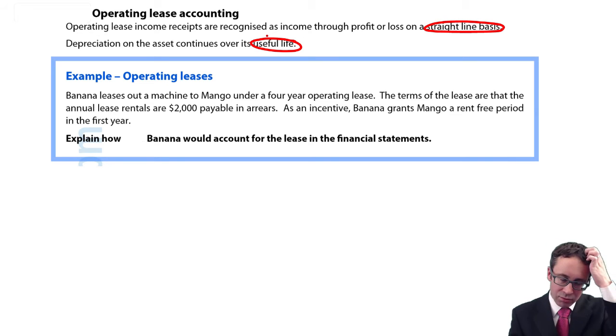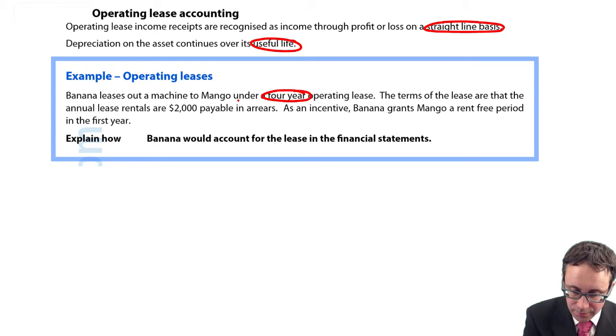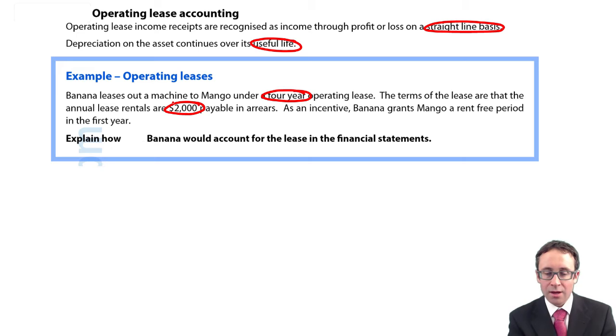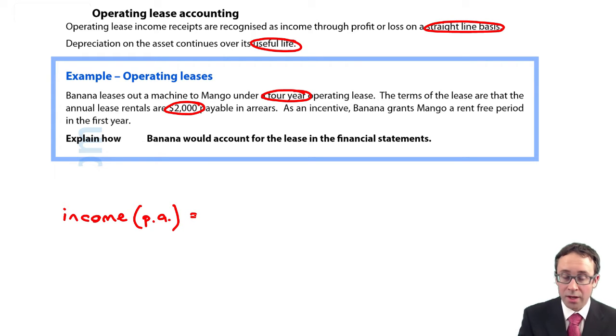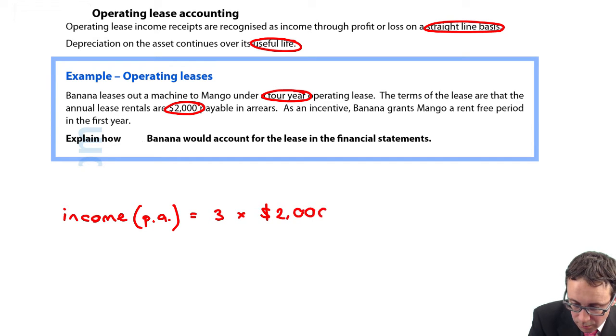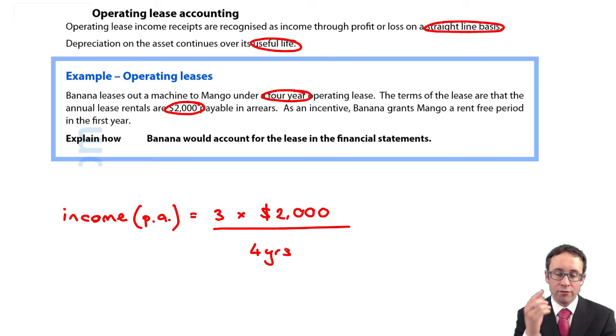The terms of the lease are that annual lease rentals are $2,000 payable in arrears. So we have four years, $2,000 in payments. As an incentive, Banana the lessor grants Mango a rent-free period in the first year. Be careful, there are three payments of $2,000 because in the first year there is a rent-free period, and then we spread that over the four years.